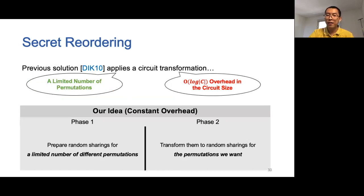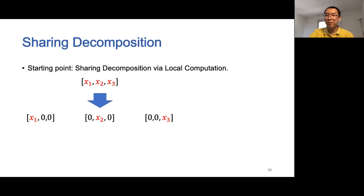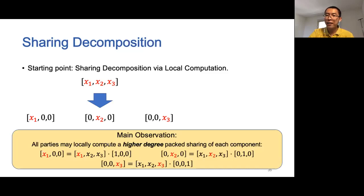Our solution contains two phases. In phase 1, we prepare random sharings only for a limited number of different permutations. In phase 2, we show that we can efficiently transform them to random sharings for the permutations we want. Our starting point is a simple observation: for packed sharing, all parties can locally decompose it into small components. For example, for a packed sharing of (x1, x2, x3), we can obtain three sharings: a sharing of (x1, 0, 0), a sharing of (0, x2, 0), and a sharing of (0, 0, x3). The key observation is that all parties can locally compute a higher-degree packed sharing of each component by locally multiplying the original sharing with a sharing of an indicator vector.